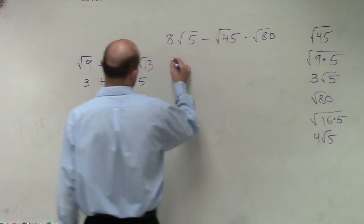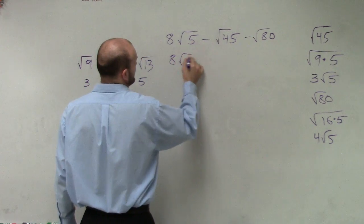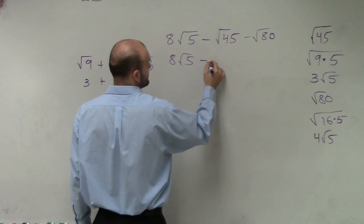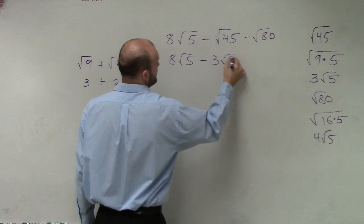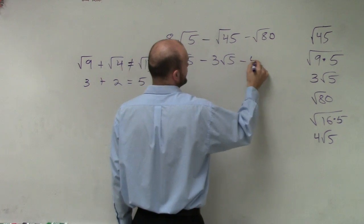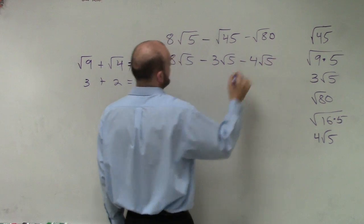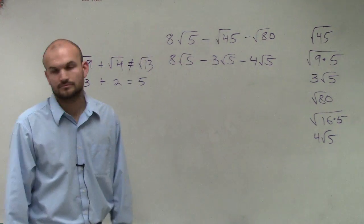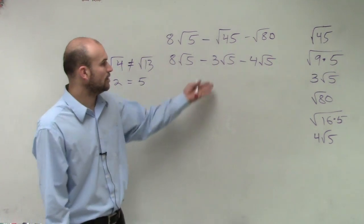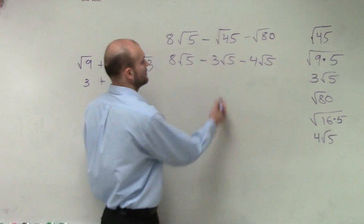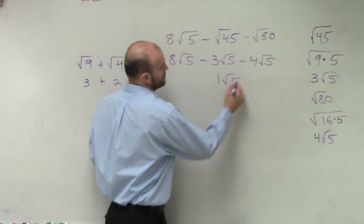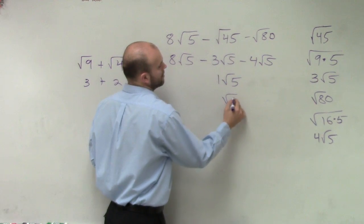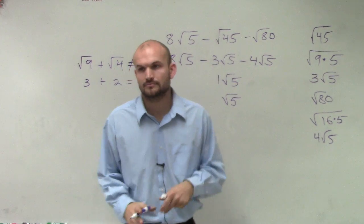So when simplifying these, I now write this as 8 square root of 5 minus 3 square root of 5 minus 4 square root of 5. So it's just going to equal 1 square root of 5, which we can just write as square root of 5. Good job.